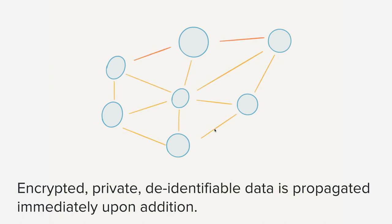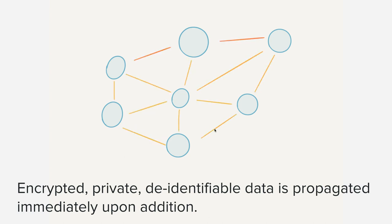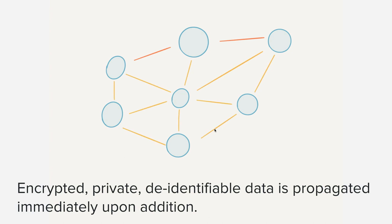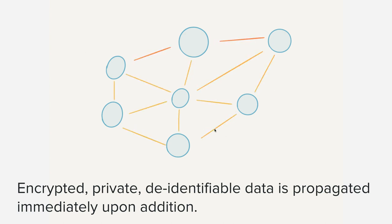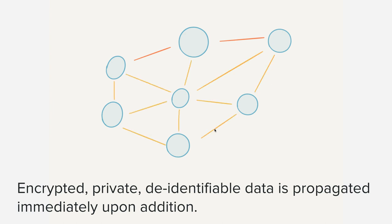When we think about a peer-to-peer network, we have to consider that encrypted, private, de-identifiable data — especially in the blockchain — is propagated immediately upon addition. Within that network, we're automatically sharing information across nodes. As we change, modify, add new information, or delete information, that's automatically changed across the whole network. So whatever files, information, or truth we have on one computer or node is automatically spread across all of the others.